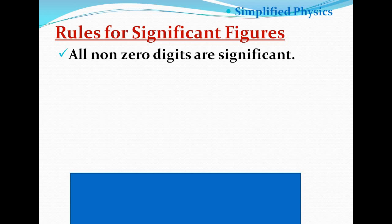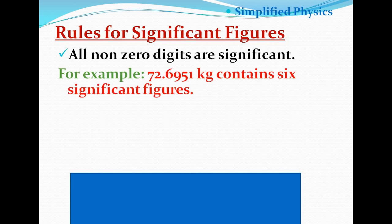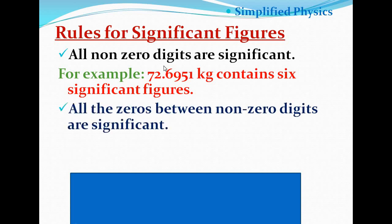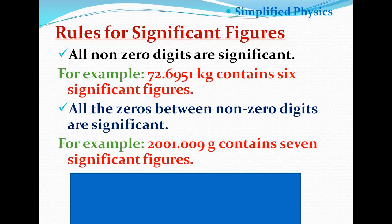The very first rule: all non-zero digits are significant. For example, 72.6951 contains six significant figures. The second rule: all zeros between non-zero digits are also significant. For example, 2001009 — all four zeros are significant — giving a total of seven significant figures.